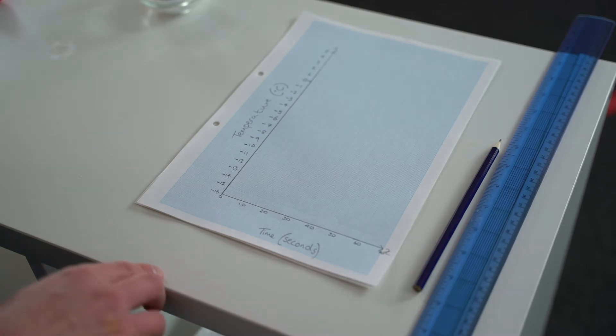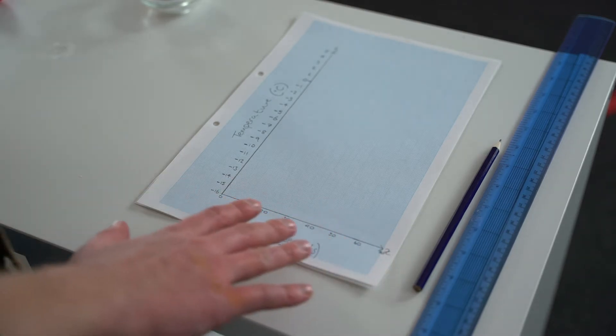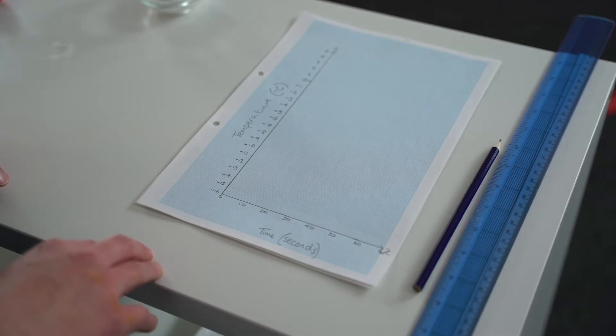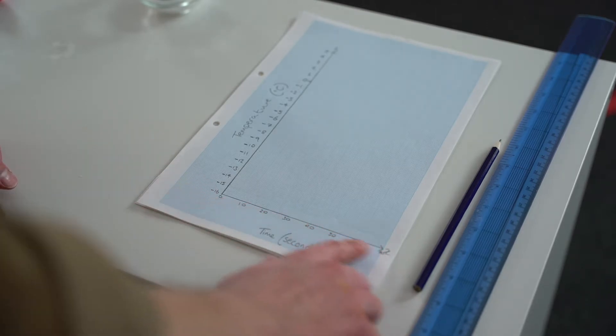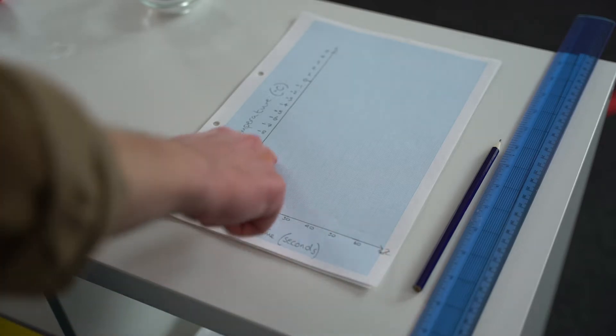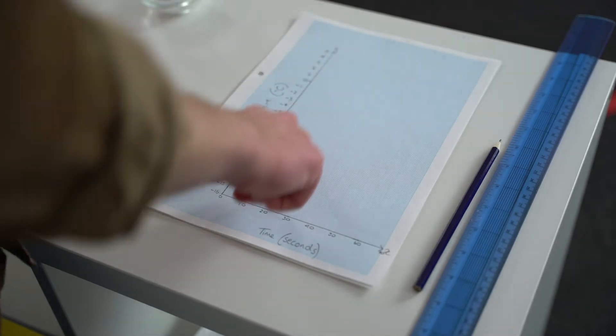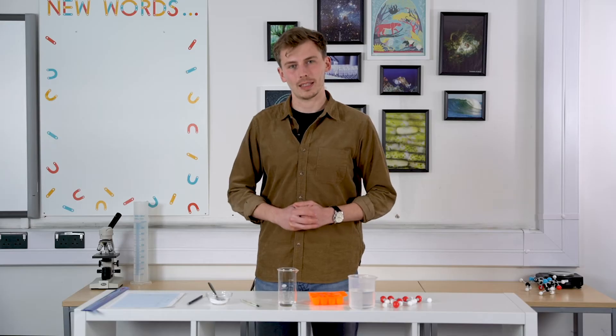And I've also gone ahead and drawn a graph for us to track our temperature change across time. So what I've done here is drawn time along the bottom with seconds, and on our y-axis going up here, we're going to mark our temperature in degrees Celsius. So feel free to draw your own graph and follow along as we go.